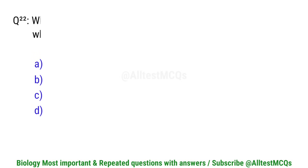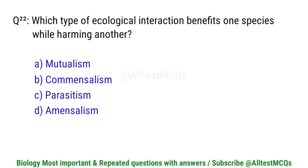Question number 22. Which type of ecological interaction benefits one species while harming another? Right option is C. Parasitism.